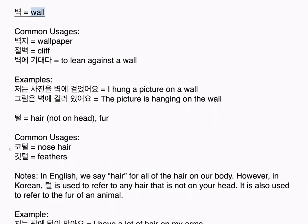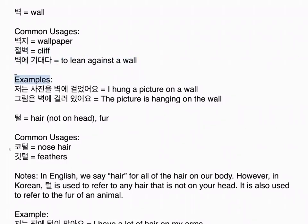벽 means wall. Common usages: 벽지 means wallpaper, 절벽 means cliff, 벽에 기대다 means to lean against a wall. Examples: 저는 사진을 벽에 걸었어요. I hung a picture on a wall. 그림은 벽에 걸려 있어요. The picture is hanging on the wall.